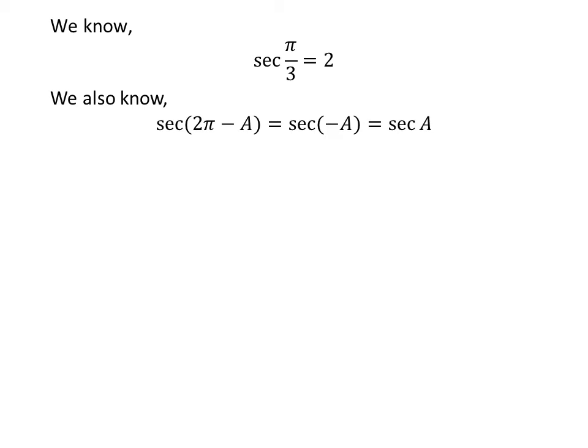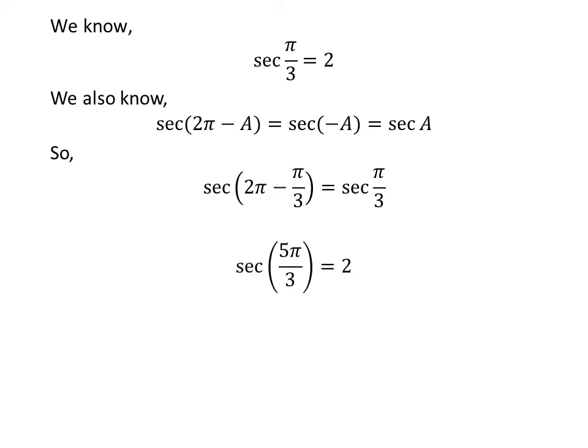We also know the value of secant of x repeats after the interval of 2π. So secant of (2π minus a) is equal to secant of minus a. We also know the trigonometric identity secant of minus a is equal to secant of a. The proof of this identity is given in the video appearing in the upper right corner, and the link is also given in the description. Applying this identity: secant of (2π minus π/3) equals secant of π/3. Since 2π minus π/3 equals 5π/3, we get secant of 5π/3 is equal to 2.